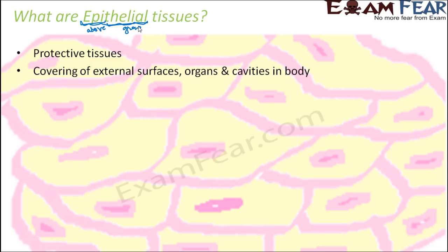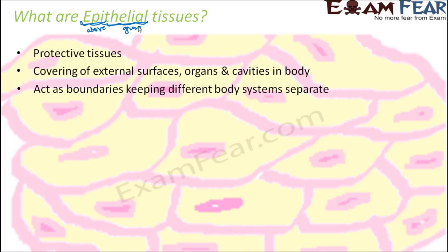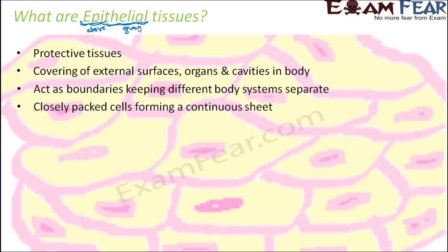The basic function of epithelial tissue is protection. They act as boundaries keeping different body systems separate — keeping different things separate so they do not get mixed up with each other. They are made up of closely packed cells forming a continuous sheet, and you really do not find a lot of intercellular space or intercellular material in epithelial tissue. Why are they so closely packed? If they want to act as a covering to something and are not closely packed, there could be leakage between cells.